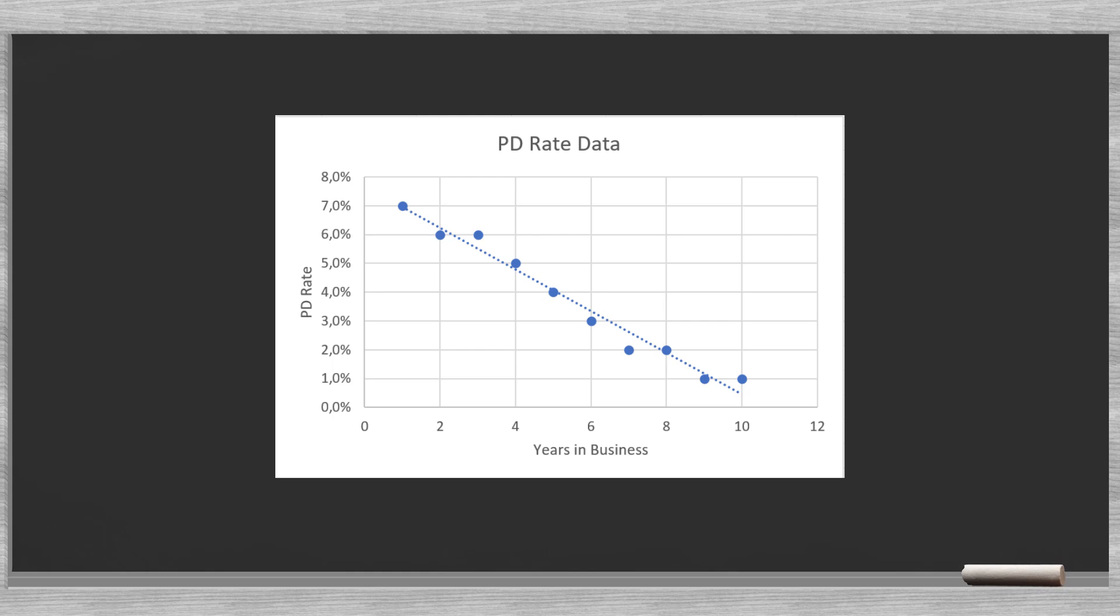In the graph we clearly see that there is a relationship. We can draw a straight line through these data points. If we know the function behind this line, we have our model. We define straight lines with the following function: y equals ax plus b.